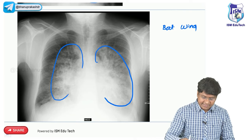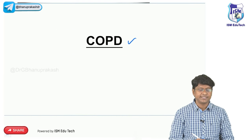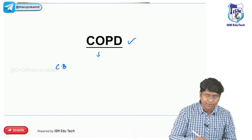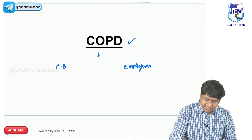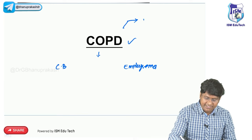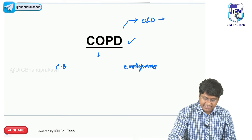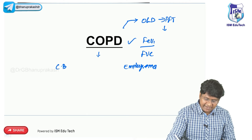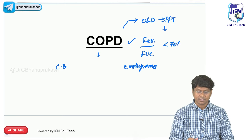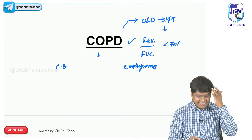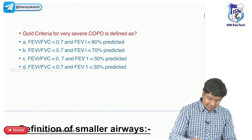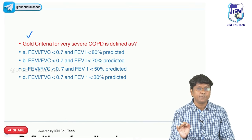After ARDS, the next topic is COPD - chronic obstructive pulmonary disease. COPD has two important components: chronic bronchitis and emphysema. It is an obstructive lung disease, confirmed by pulmonary function test where FEV1/FVC will be less than 70%. The criteria to decide the severity of COPD is the GOLD criteria - Global Initiative for Obstructive Lung Disease.